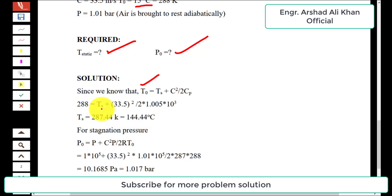T_0 = 288 K, T_s is unknown which we need to find, and C = 33.5 m/s. When we simplify and rearrange for static temperature, the final value comes out to 287.44 K, which converts to 14.44°C.